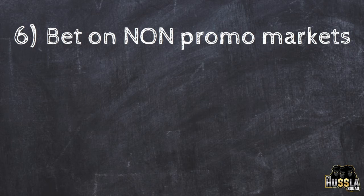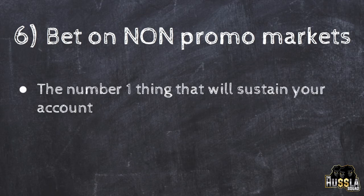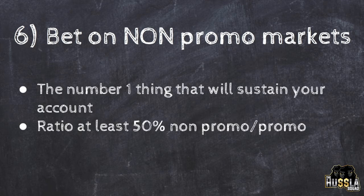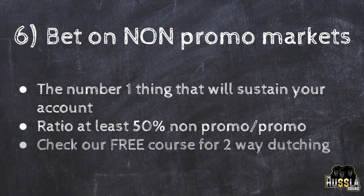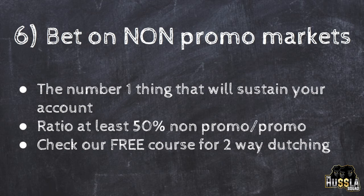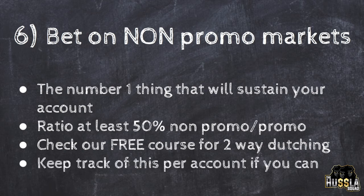Rule six: bet on non-promo markets. The number one thing that will sustain your account is betting on non-promo markets. The more you do this, the more your account looks genuine. The ratio has to be at least 50% non-promo to promo. At the start you won't be confident with mug bets, so you'll need to use hedging and two-way dutching with a small loss to fulfill this ratio. Once you improve, you can place bets on football markets or whatever sport you're confident in. If you're good enough statistically, you can actually make money from those gambling bets. Keep track of this ratio per account if you can.